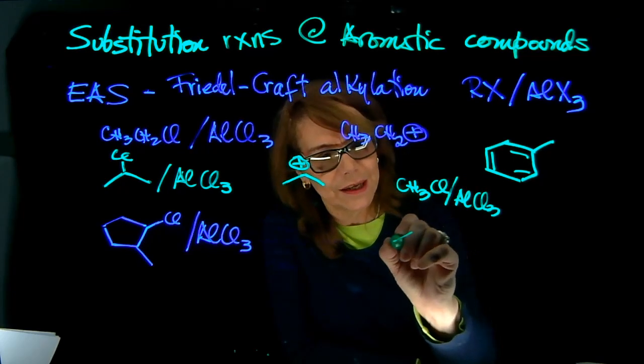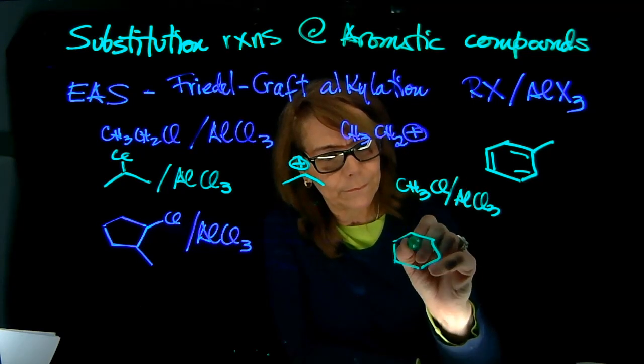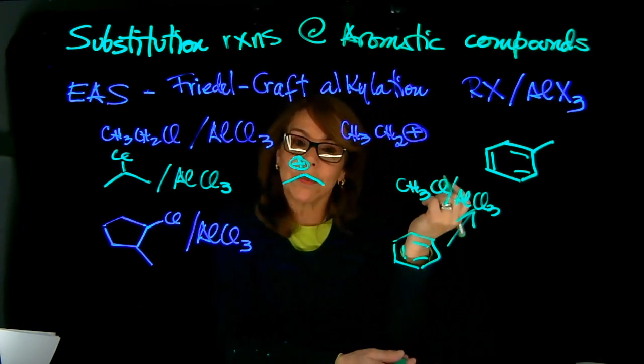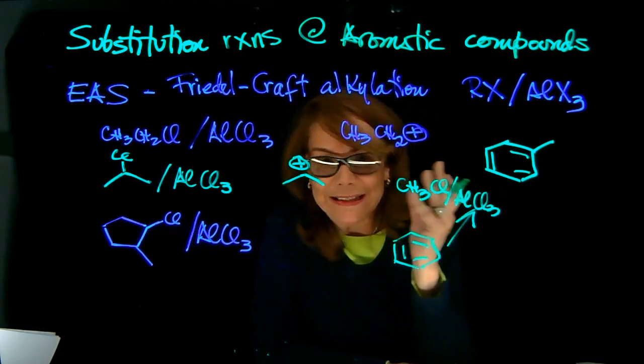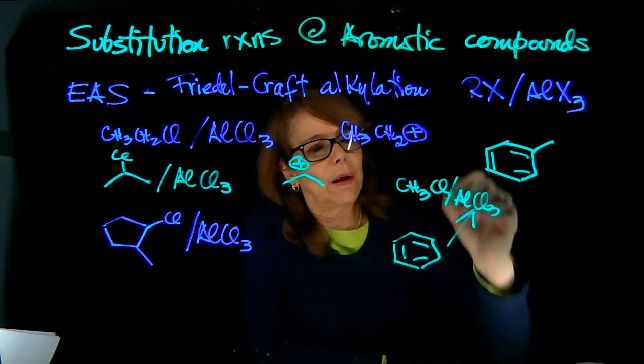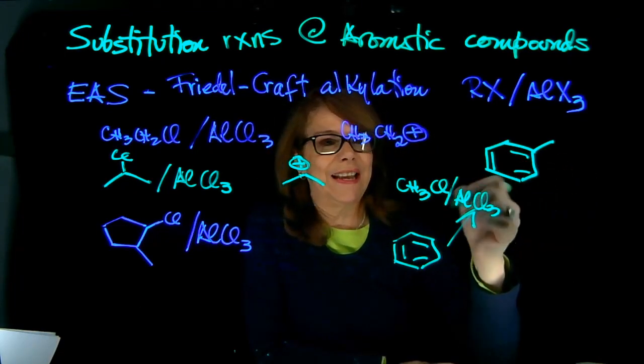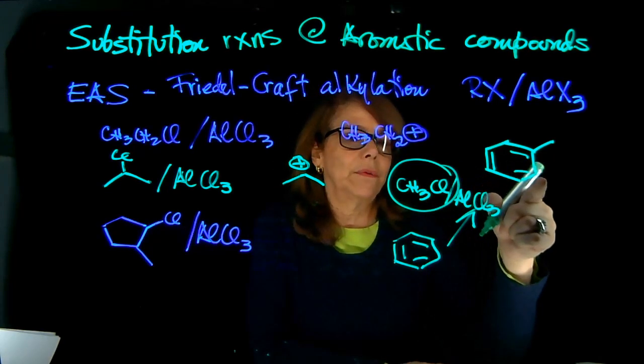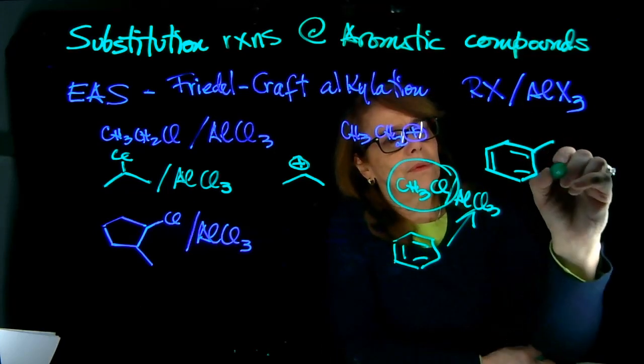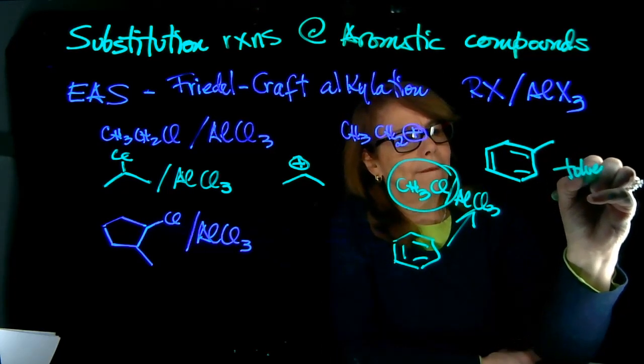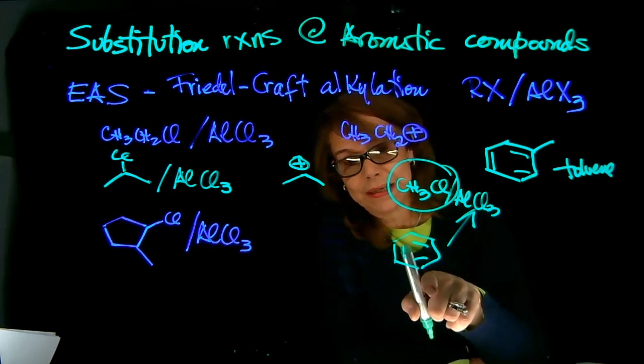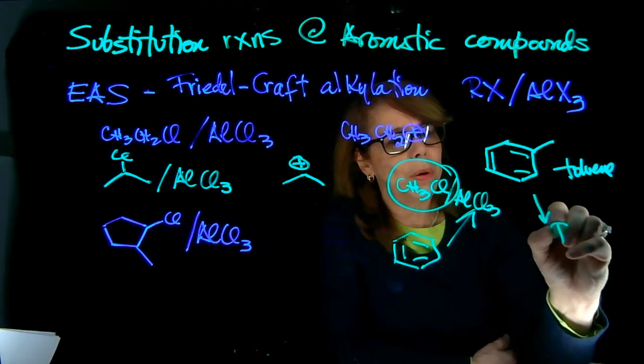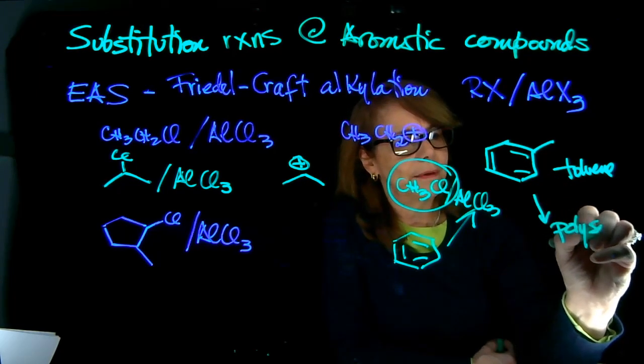So you start from benzene. Let's see what the problems to that reaction are, advantages and disadvantages. Now, when we have that reaction, if we have an excess of the alkylating agent, the problem with this is that toluene, the product, is more reactive than benzene towards Friedel-Craft alkylation.